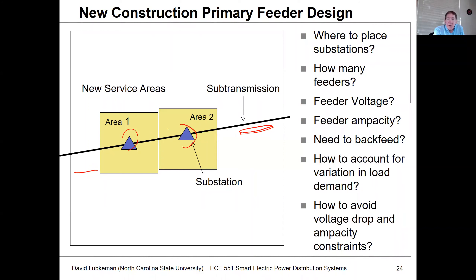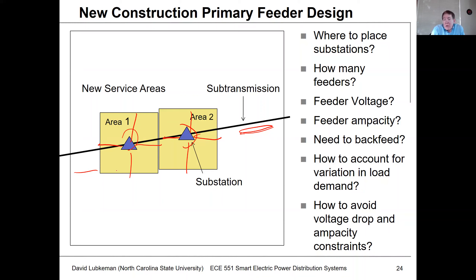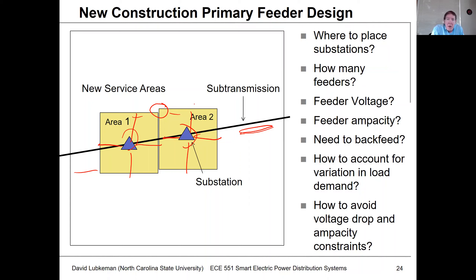You need to figure out where the substations go, how many feeders you're going to have, and how you're going to route these feeders within these areas. You need to know what type of feeder voltage to use and what feeder ampacities in terms of current ratings need to be supported. You need to be able to backfeed, so if you have load, does it need to be served from either substation? You need some way of calculating what the net load is going to be in each area based on possible land use, to set up a feeder infrastructure without issues like voltage drop and ampacity limits.